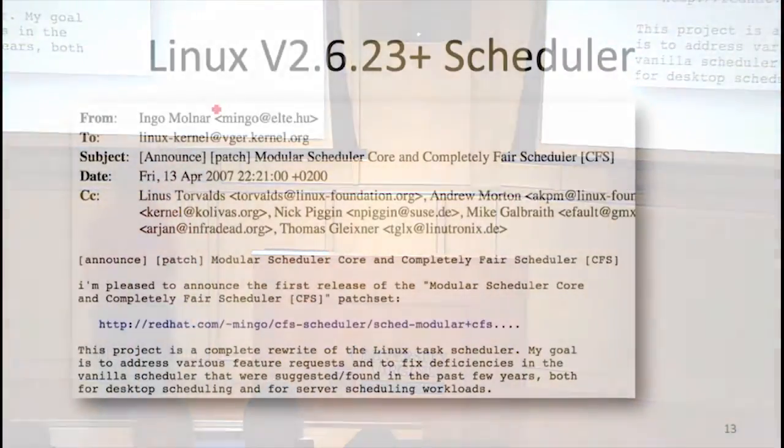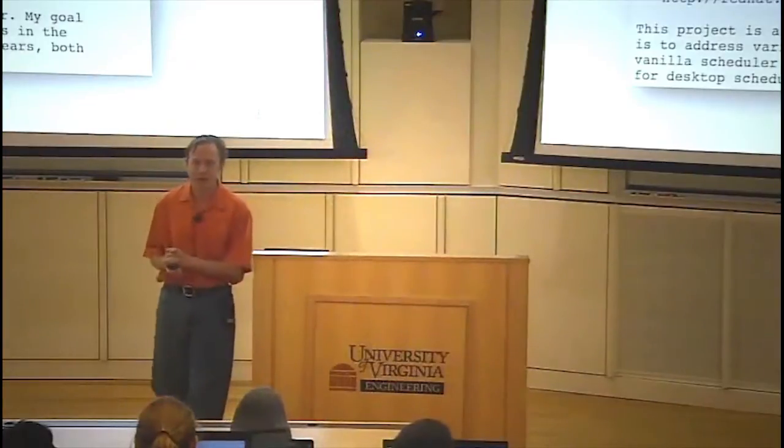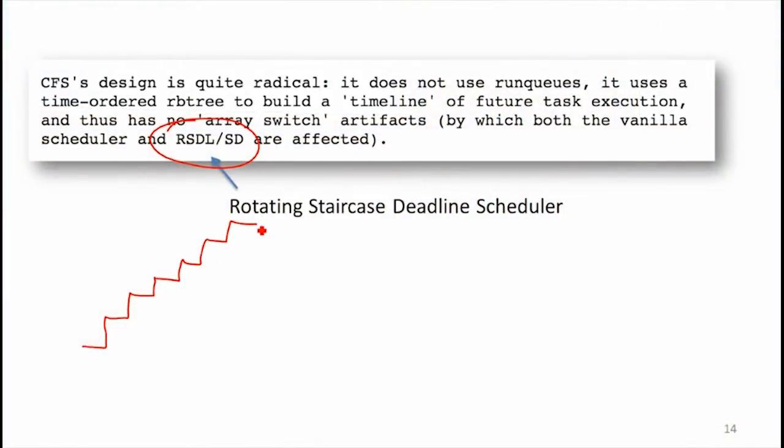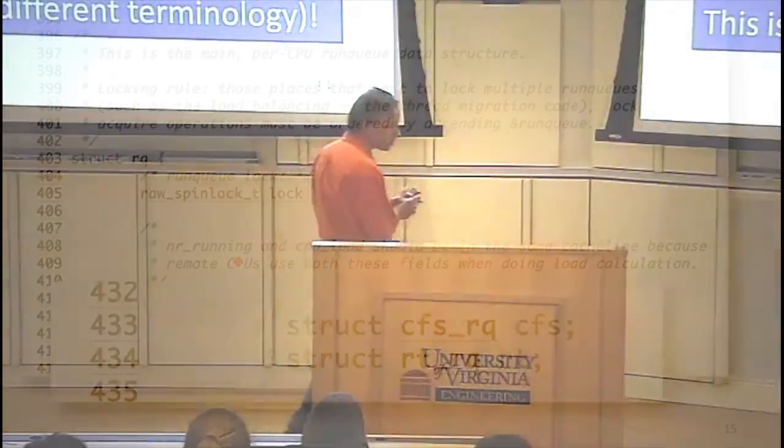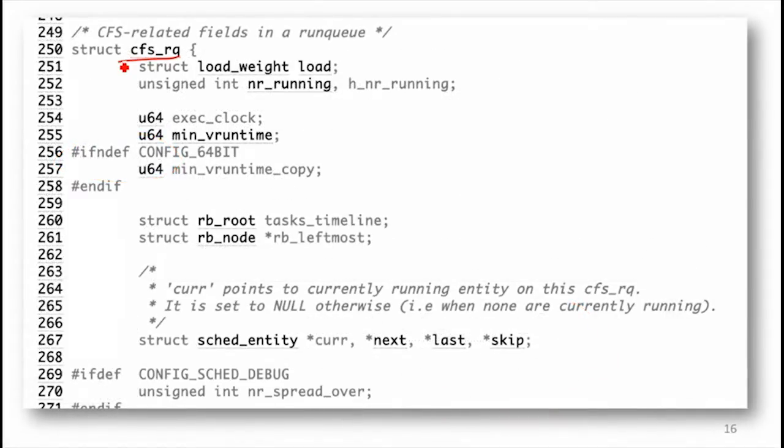Linux 2.6.23 replaced that. And the new scheduler was called the modular scheduler core and completely fair scheduler. A much better marketing name than big O N or big O 1. The way this scheduler worked is what they called the rotating staircase deadline scheduler. What this is is actually the same thing that we talked about last class. It's stride scheduling. This is why it's the staircase. We can think of this like stride scheduling. You get your time slices as that staircase goes up. This was the stride scheduling that hopefully you remember from last class. So what is the running time? Maybe we should look at a little more code first. The code's more complicated than the simple stride scheduling code. So there's a run queue which has two queues in it.